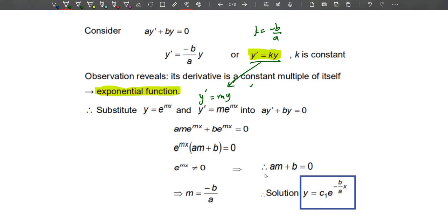Therefore, am + b equals zero. This one cannot be equal to zero because exponent itself cannot equal to zero. So therefore, we will let am + b equal to zero, which means m is equal to negative b over a. And from here, we will have the solution: y equals c_1 times e^(negative b over a times x).